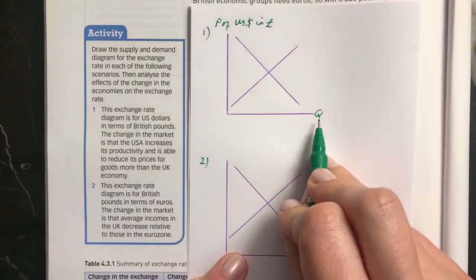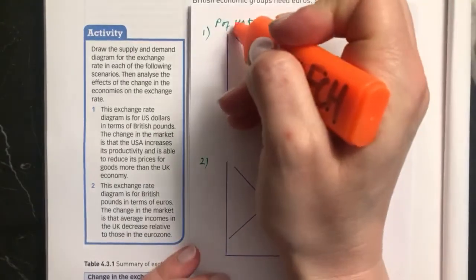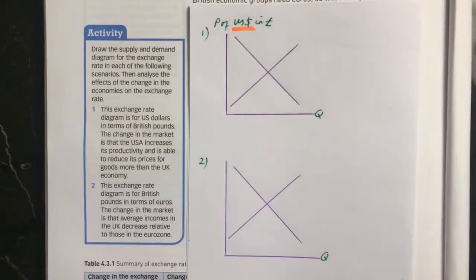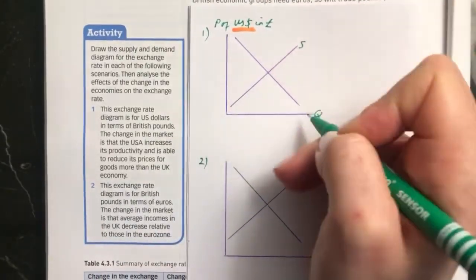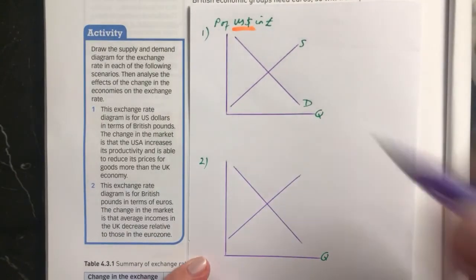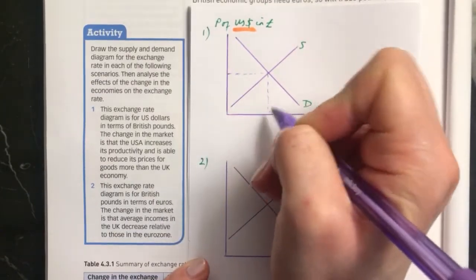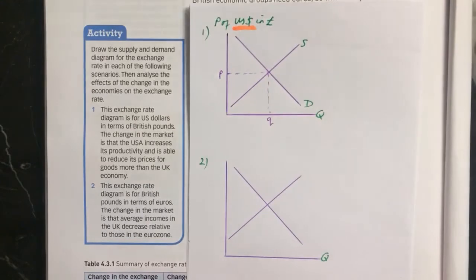And then quantity will be here. Remember, this whole diagram is about US dollars. So this is showing the supply of US dollars and the demand for US dollars. And we know that we're going to have the equilibrium. Draw this with a ruler, remember: little p, little q here.